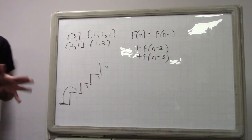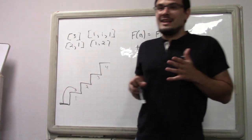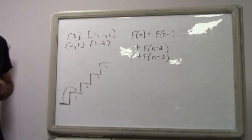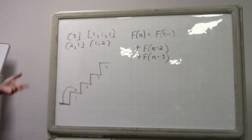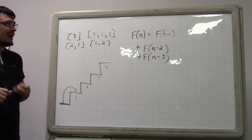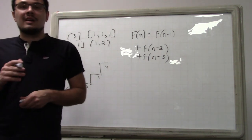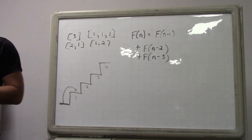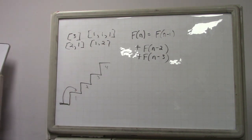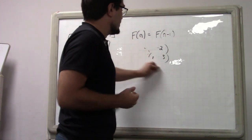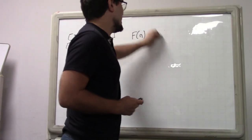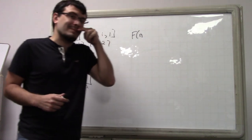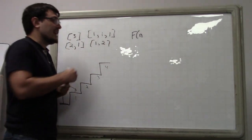This one isn't hard, but it takes a little bit above the most rudimentary understanding — you have to look at the problem and have some insight. One way to handle not being able to climb three steps twice in a row — and this is kind of the most principled way, though maybe not what some people would consider the simplest — is to make it a function of two variables.